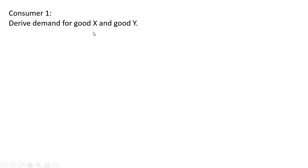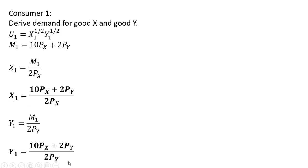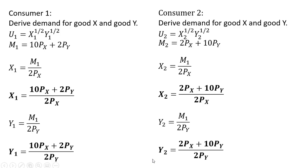We're going to derive the demand for good X and good Y. Here is the demand for good X for consumer one, substituting in M subscript one. Consumer one's demand for good X, and doing a similar thing for good Y, we get consumer one's demand for good Y. For consumer two, consumer two's demand for good X and consumer two's demand for good Y look as follows.